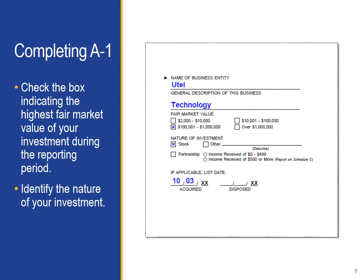If you are reporting a partnership of less than 10%, you must also indicate how much income you received from the partnership during the reporting period. If you received $500 or more from the partnership, you must include that income on Schedule C in addition to noting it here.